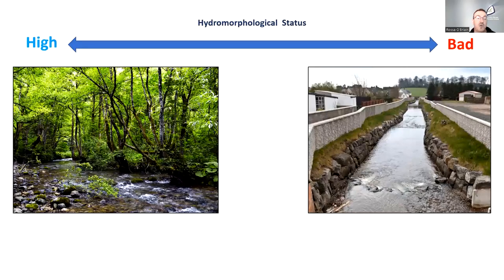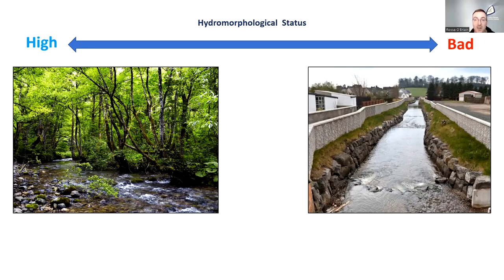When assessing hydromorphological status we use metrics, focusing on components of the river and giving a score based on how natural or modified it is. A very natural river scores well because the riparian zone is intact, the natural channel form with features indicating natural erosion and deposition is present, and the river is free to connect with the floodplain. In a highly modified river there's no riparian zone, the river has been straightened, banks have been riprapped preventing erosion and migration, and there's no floodplain connection due to flood walls — presumably because houses were built in the floodplain.